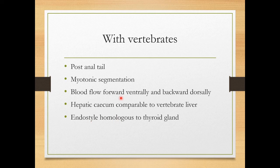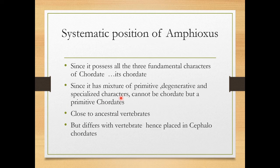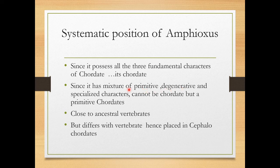Regarding the systematic position of Amphioxus: since it possesses all three fundamental characters of chordates — presence of notochord, post-anal tail, and pharynx with gill slits — it is classified as a chordate. However, since it has a mixture of primitive, degenerate, and specialized characters, it is considered a primitive chordate rather than a fully advanced chordate.